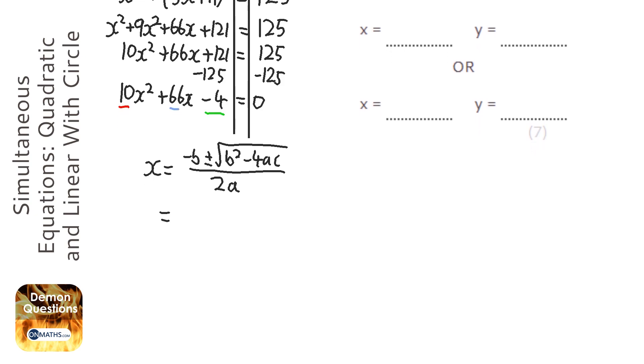OK, so what you can do is just use your calculator to do this. Press the fraction button first. We're going to do the minus 66, because b is 66. And we're going to type in plus square root button.